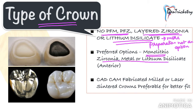If the patient wants a more economical option, you can suggest a DMLS metal crown. With CAD/CAM fabricated, milled, or laser-sintered technology, you are eliminating the potential for casting errors, and the fit of these crowns is definitely more superior than conventional ones.